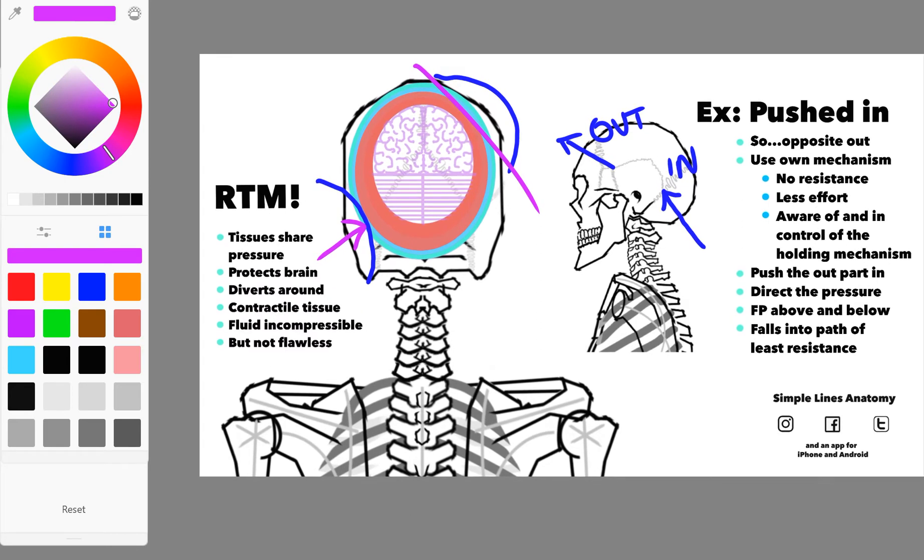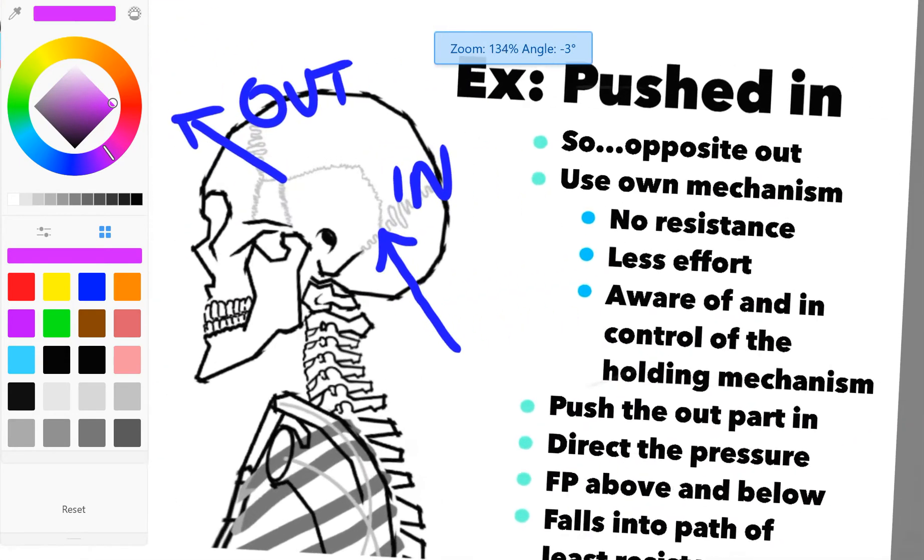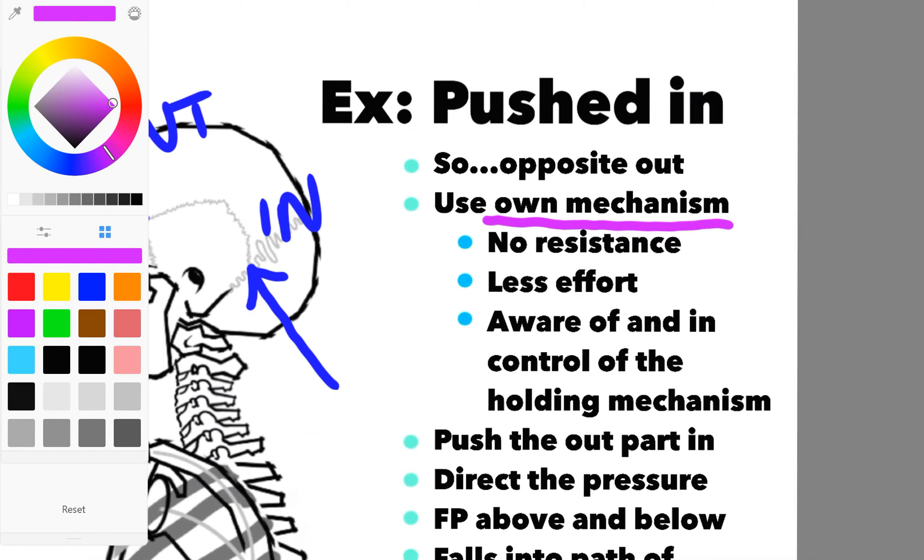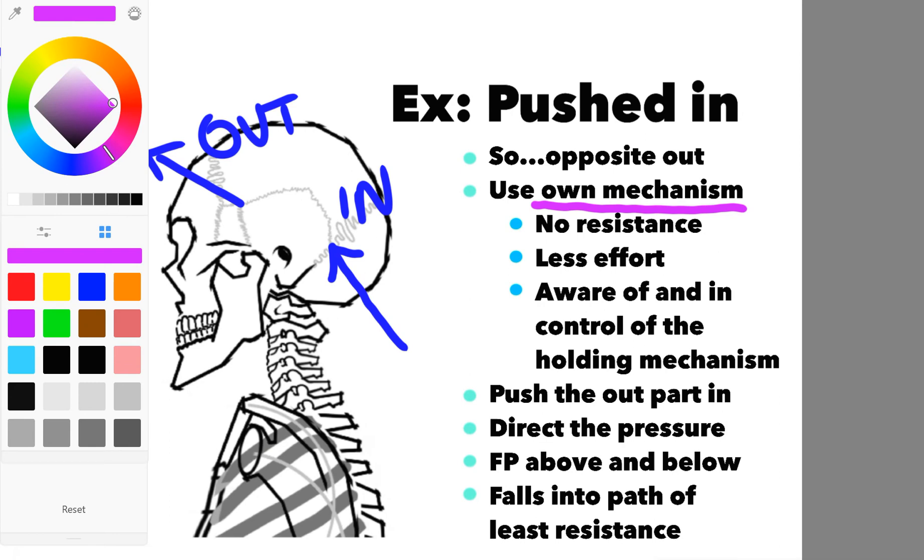Now what we can do in this situation is use the mechanism that brought this on to correct it. That's very important. When we use its own mechanism, the reciprocal tension membrane, to fix a problem, what we encounter is true of any practice that uses the body's own reflexes.